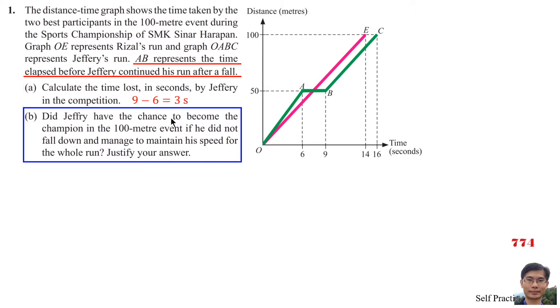Did Jeffrey have the chance to become the champion in the 100m event if he did not fall down and managed to maintain his speed for the whole run? Justify your answer.